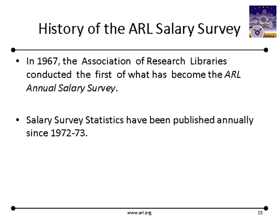A little bit about the history of the two flagship publications. The ARL statistics goes back to 1908 with the Gerald statistics, while the salary survey goes back to 1967, when the Association of Research Libraries conducted the first of what has become the ARL annual salary survey. It has been published annually since 1972-73. In 1972-73, the median salary was in the range of $13,000 in the West, $12,000 in the North-Central, $13,000 in the Northeast, $11,700 in the South, and beginning salaries were less than $10,000 at that time.